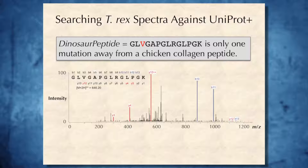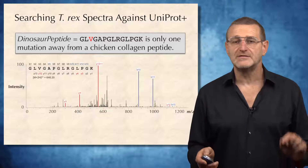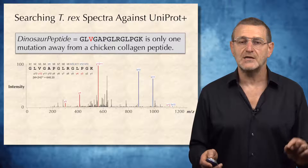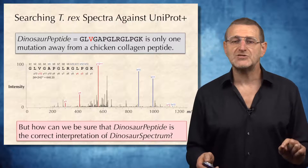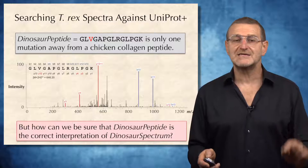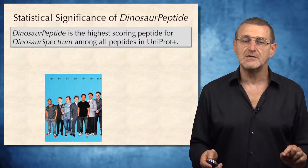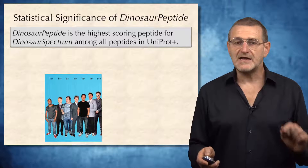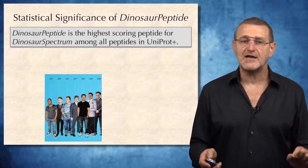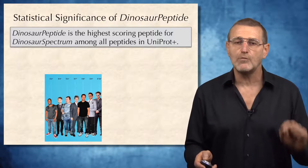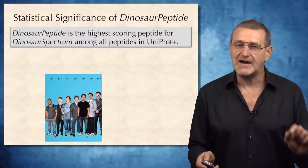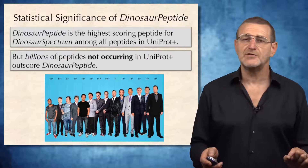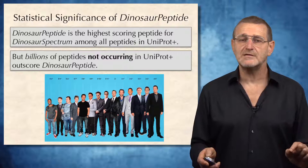For example, this is one of the peptides identified by Azara for a dinosaur spectrum, and this peptide is only one mutation away — shown in red — from a chicken collagen peptide. But how can we be sure that this dinosaur peptide is the correct interpretation of the dinosaur spectrum? Shouldn't we analyze the statistical significance of the dinosaur peptide? In fact, the dinosaur peptide is the highest-scoring peptide for the dinosaur spectrum among all peptides in UniProt+. But the surprising fact is that there are billions of peptides not occurring in UniProt+ that outscore the dinosaur peptide.